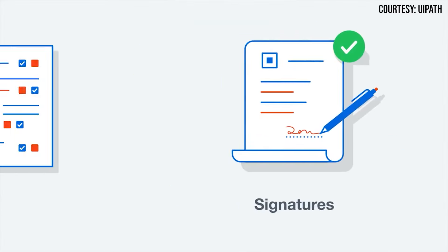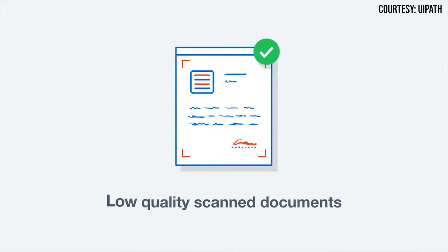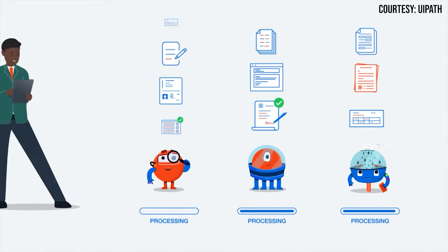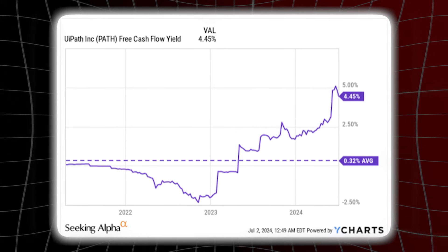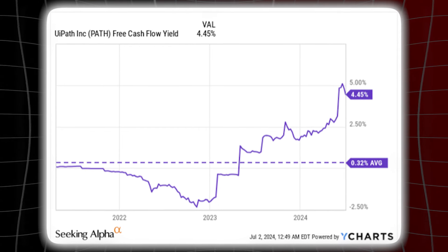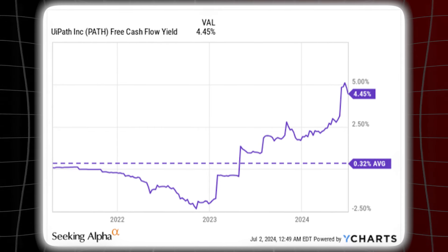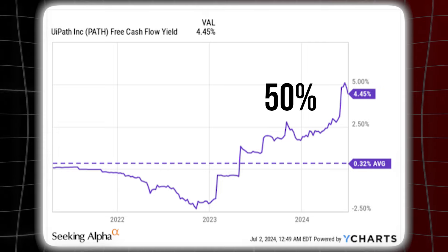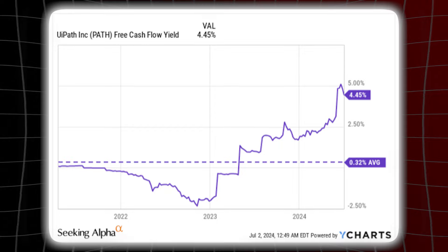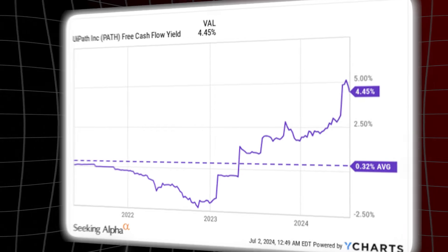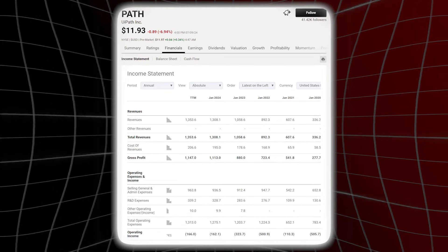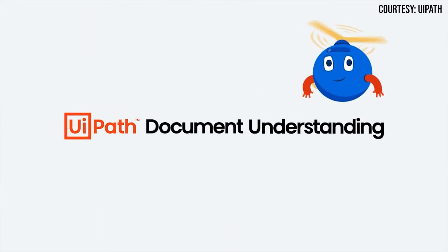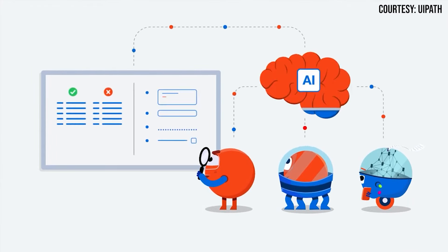UiPath's focus on AI-powered automation positions it as a leader in intelligent document processing, a space with significant customer demand. The company has transitioned from sporadic positive free cash flow to a more consistent pattern, delivering positive FCF for the past six quarters with a year-over-year growth rate exceeding 50 percent. This translates to an attractive FCF yield significantly higher than historical averages. While some may question FCF quality due to stock-based compensation, its decreasing impact over time suggests genuine improvement in UiPath's financial health, with further room to improve by streamlining receivables collection.